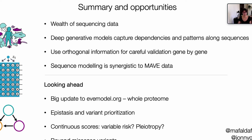Another thing we haven't looked at is that our scores are actually continuous, and we haven't investigated what this continuous score means. Could it be related to variable risk per variant? Could it be related to association to different disease phenotypes? This is something we're also very interested in. And obviously one of the directions we're actively pushing forward is building models beyond missense variants into regulatory regions. Thank you very much.